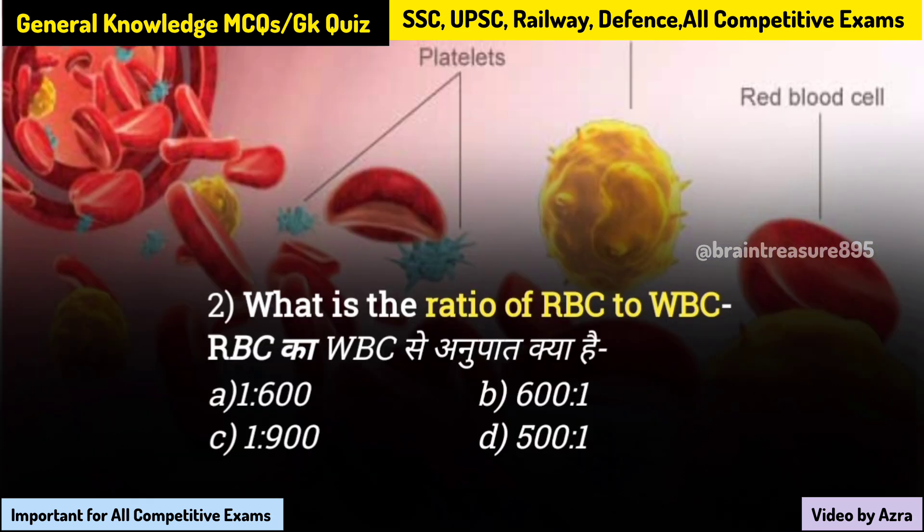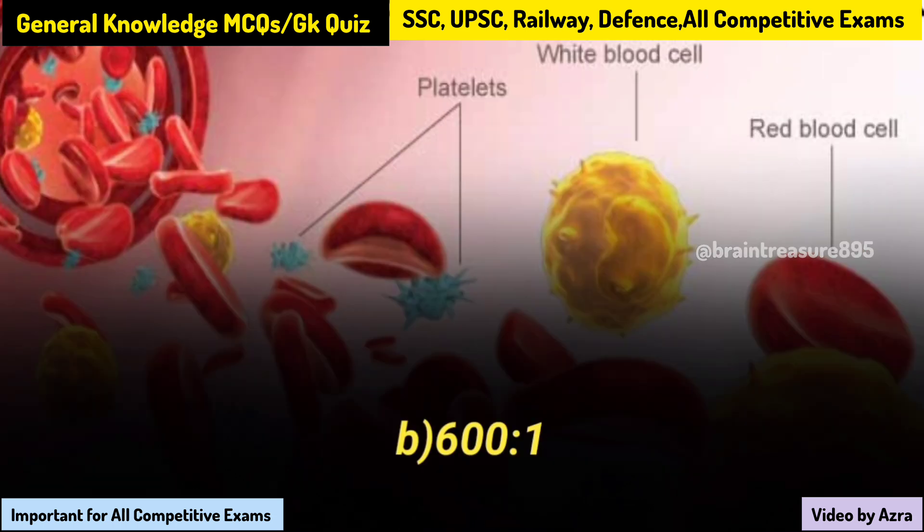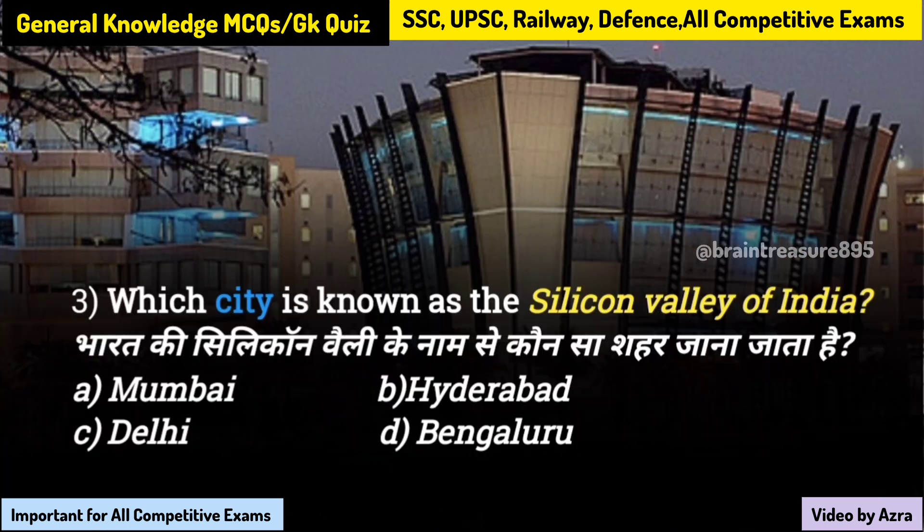What is the ratio of RBC to WBC? RBC ka WBC se anupat kya hai? The answer is six hundred is to one — 600:1.